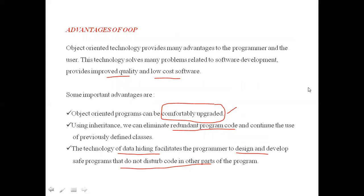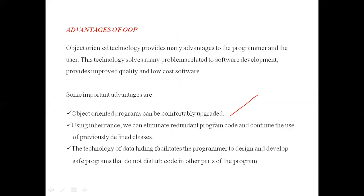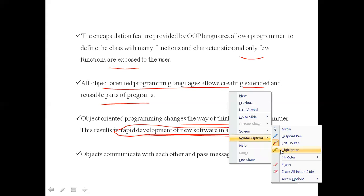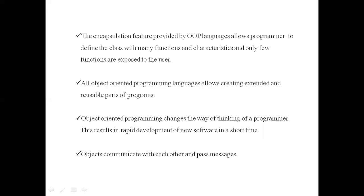To summarize, software can be easily upgraded; redundant code is eliminated because of inheritance; data-hiding facility is available; data encapsulation facility is there; code reusability is also there; we can develop a new software in a short period of time; and objects can communicate with one another through messages. These are the advantages of object-oriented programming. Next, we have to see a list of object-oriented programming languages.